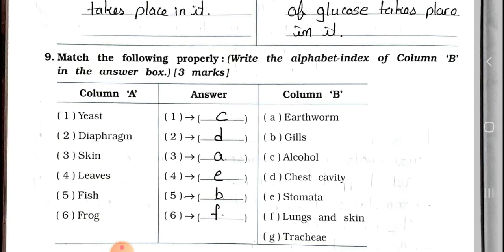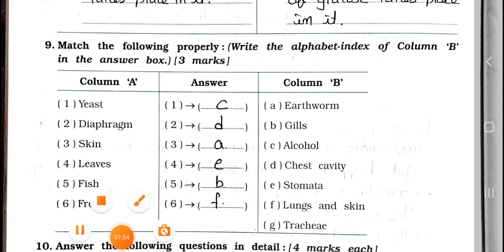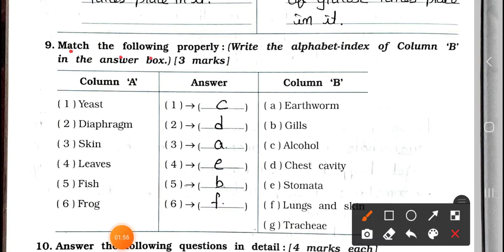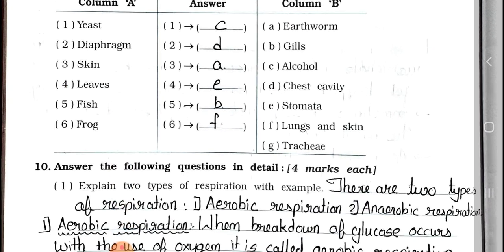Now see question 9. Match the following properly. Write the alphabet index of column B in the answer box. It carries three marks. See column A. Number 1: Yeast. Number 2: Diaphragm. Number 3: Skin. Number 4: Leaves. Fifth one: Fish. And sixth one: Frog. Now see column B. A: Earthworm. B: Gills. C: Alcohol. D: Chest cavity. E: Stomata. F: Lungs and skin.